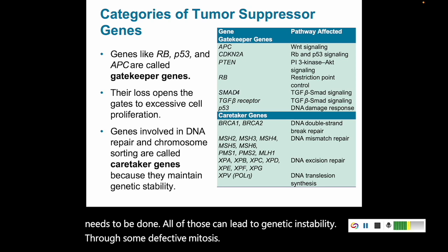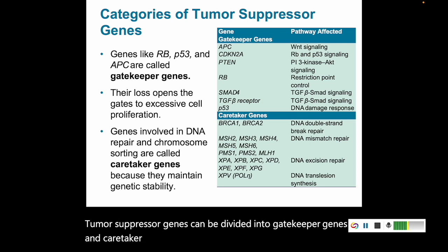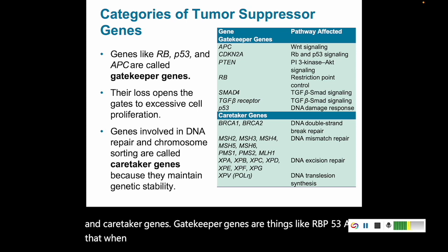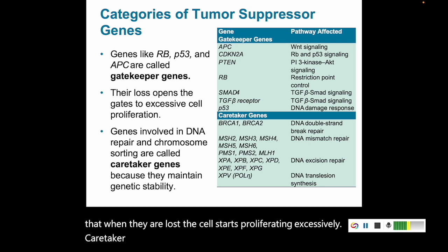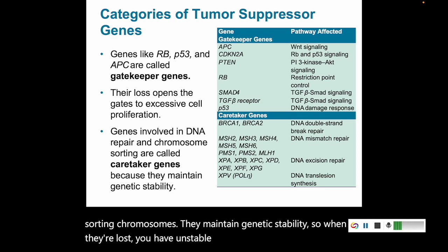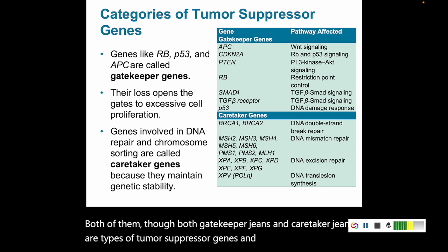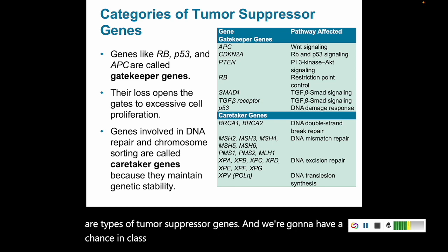Tumor suppressor genes can be divided into gatekeeper genes and caretaker genes. Gatekeeper genes — things like RB, P53, and APC — when lost, cause the cell to start proliferating excessively. Caretaker genes are involved in repairing DNA and sorting chromosomes; they maintain genetic stability, so when they're lost, you have unstable genes. Both gatekeeper genes and caretaker genes are types of tumor suppressor genes. We'll have a chance in class to find some recent literature about one of these genes and share current research on these topics.